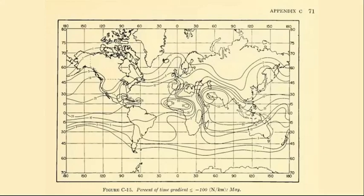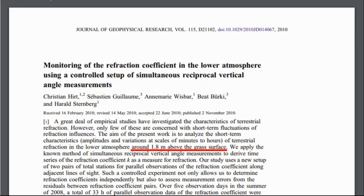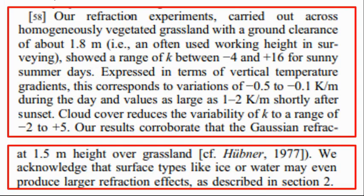There's another quick paper brought to my attention by Life is Short, which measured the K factor around 1.8 meters above the surface — generally the height above the surface that surveyors work at. What they found is an enormous variance in this K factor: a range of K between minus 4 and plus 16. Normally we're talking about a K of around 7 over 6R (1.17) or 4 over 3R (1.33), and these guys are finding huge multiples of that very close to the surface. They also note that surface types like ice or water may produce even larger refraction effects.